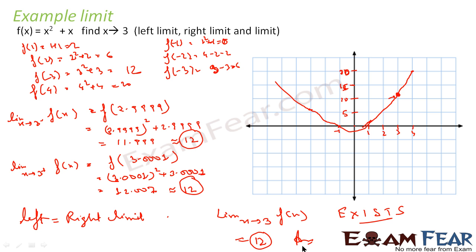We have first plotted the graph, then found the left limit and the right limit. We observed that both values are almost equal to 12. Thus, since the left limit and right limit are equal, the limit at x = 3 for this function f(x) exists, and that value is 12.